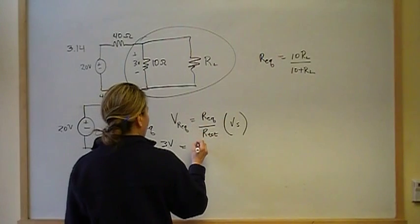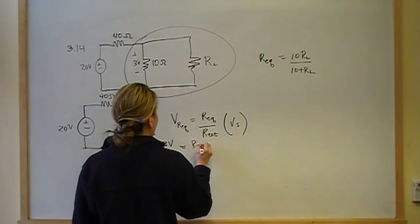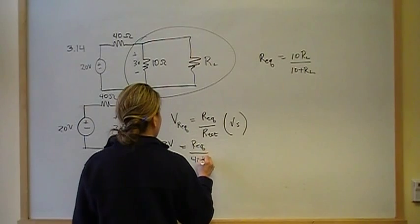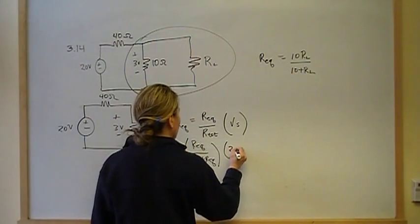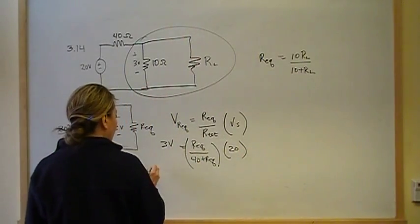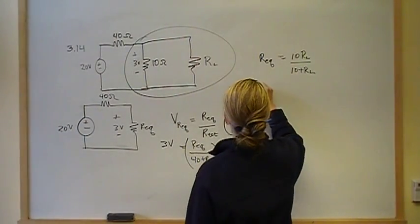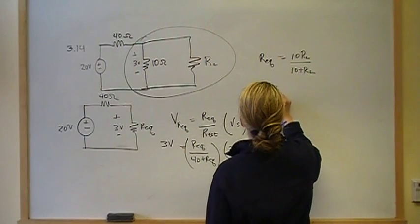Well, we don't know what REQ is but we know what V of REQ is. So, that's going to be 3 volts. REQ is still an unknown. Our total is 40 plus REQ. That ratio times 20. Divide 3 by 20. Moving this up here. We have 3 over 20.